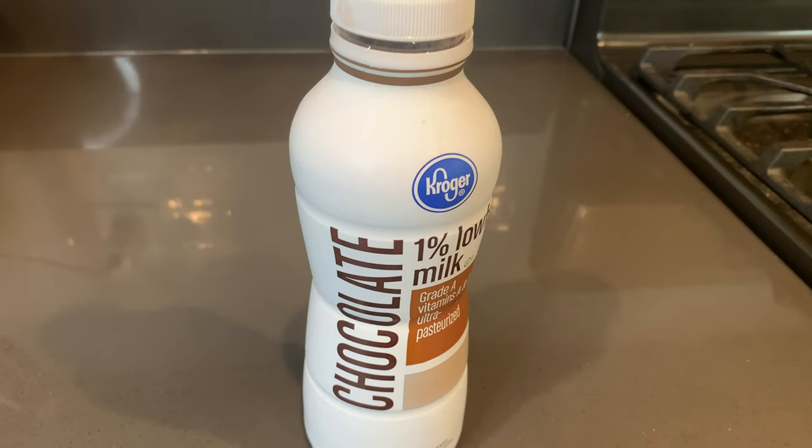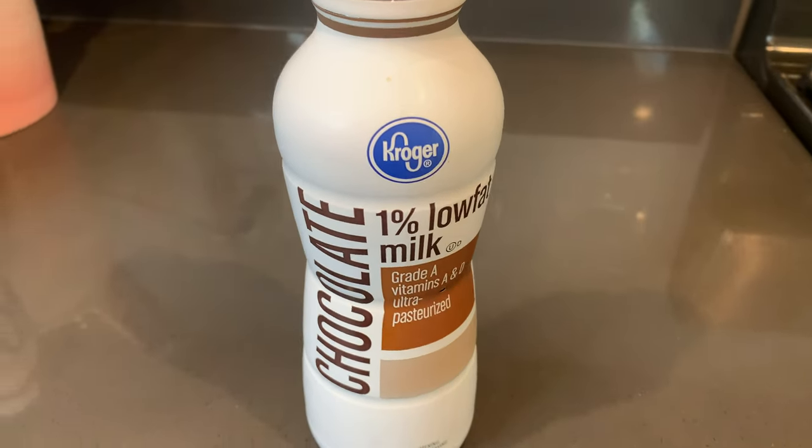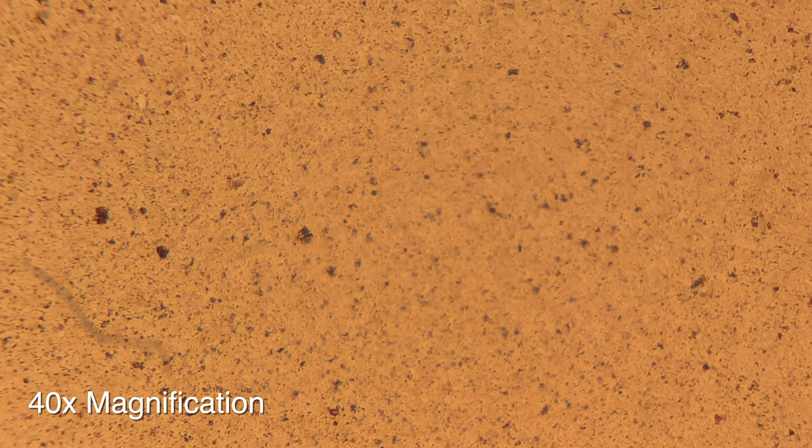Let's finish up our cow products by looking at my personal favorite, chocolate milk. As you can see, this one is very different. There are a lot of scraps of chocolate particles all over the place, and all of these chocolate scraps are a lot bigger than the fat globules that we were seeing.